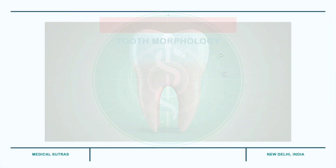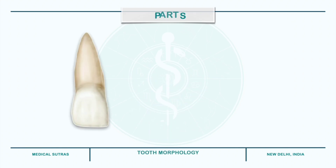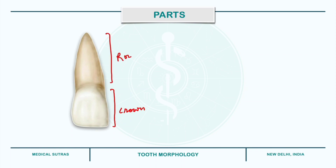Starting with parts of the teeth: each tooth consists of a crown covered with enamel and a root portion covered with cementum. These two parts meet at the cemento-enamel junction, also referred to as the cervical line.